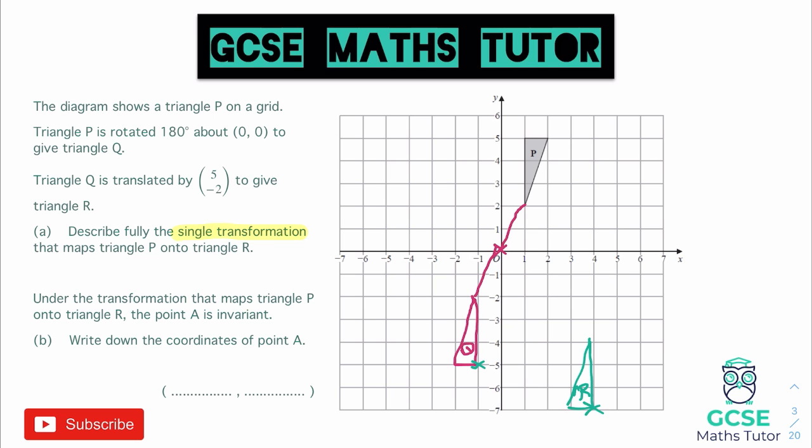The question now says: describe fully the single transformation that maps P, our original triangle, onto this new triangle R. As you can hopefully see, that has still gone through a 180 degree rotation. But now the rotation point is no longer (0, 0) — the rotation point is going to be somewhere to the right a little bit.